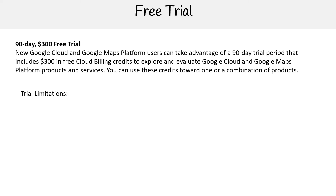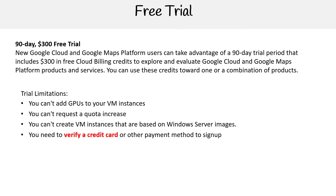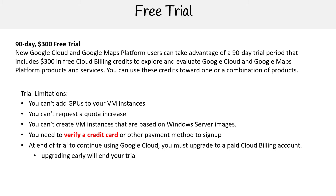There are some limitations to this trial. You cannot use these credits on GPUs for your VM instances — GPUs are generally used for machine learning or deep learning. You can't request a quota increase, so you get $300 in credits and that's all you get. You can't create VM instances based on Windows Server images. You need to verify a credit card or other payment method to sign up. At the end of your trial, to continue using Google Cloud, you must upgrade to a paid cloud billing account. Upgrading early will end your trial, because you really are in a sandbox to keep you safe.